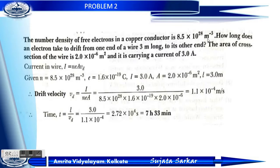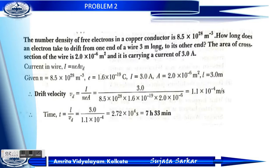Here N equals 8.5 into 10 to the power 28 per meter cube, E equals 1.6 into 10 to the power minus 19 coulomb, I equals 3 ampere, area of cross section is 2.2 into 10 to the power minus 6 meter square, and the length is 3 meter.